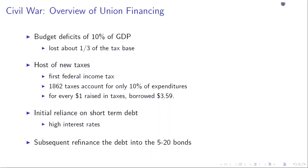The Union ultimately won this war, and the Union was preserved. The Civil War is one of the most important events in our nation's history. The outcome of this war resulted in the end of slavery in the U.S., and established once and for all the primacy of the federal government relative to the individual state governments.